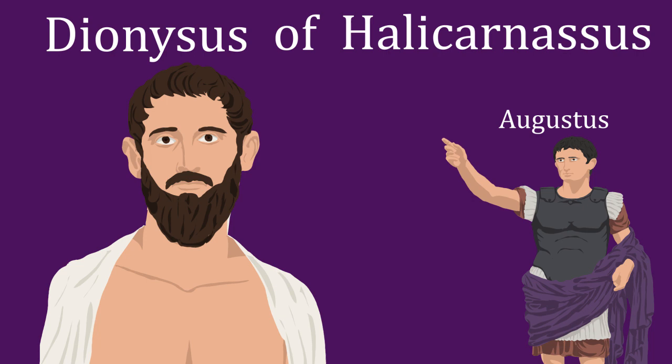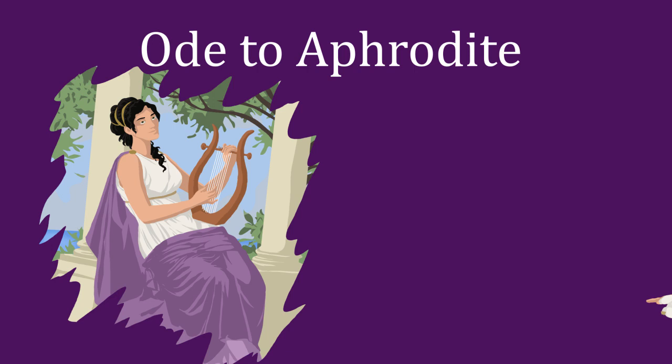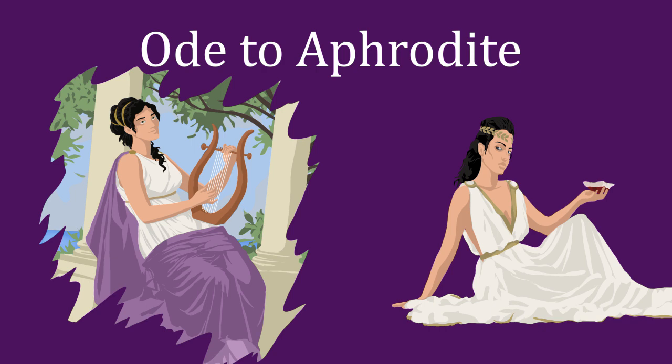The so-called Ode to Aphrodite is a lyric poem in which the speaker — one of the few occasions where Sappho actually identifies herself by name — calls on Aphrodite, the goddess of love and passion, amongst other things, for help in the pursuit of her beloved, who had so far resisted her romantic advances.